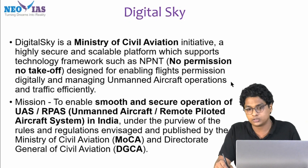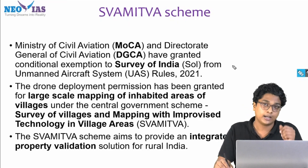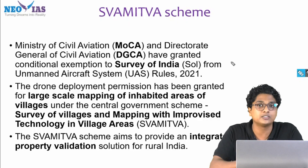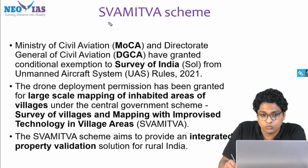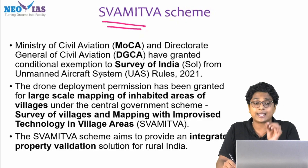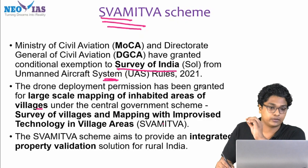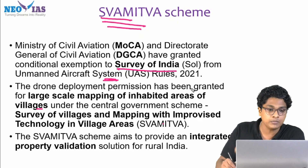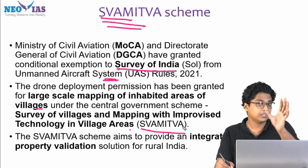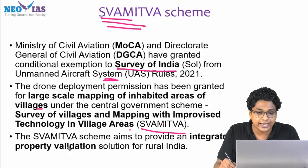One more important topic regarding this drone rule: a few weeks earlier, the government had given a relaxation under the existing Unmanned Aircraft Rule, accepting the Survey of India to use drones. Regarding that, a scheme was in news discussed in PIB — the Ministry of Civil Aviation and DGCA granted conditional exemption to the Survey of India from the Unmanned Aircraft System rules. Drone deployment permission was granted for large-scale mapping of uninhabited areas of villages under the central scheme SVAMITVA — Survey of Villages and Mapping with Improvised Technology in Village Areas. The scheme aims to provide an integrated property validation solution for rural India.